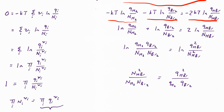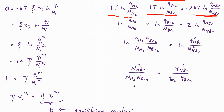Now we have log of something equals log of something, so exponentiating gives q's over n's equal to q's over n's. Rearranging — bringing q(H2) and q(Br2) to the denominator on the right, and n(HBr)² to the numerator on the left — we get n(HBr)² / (n(H2)·n(Br2)) = q(HBr)² / (q(H2)·q(Br2)). That's the equilibrium condition. Notice there are no pressures, since we weren't assuming ideal gases, but it does tell us the relationship between the numbers of each molecule.